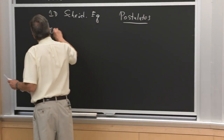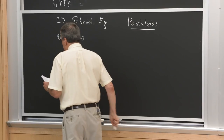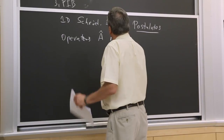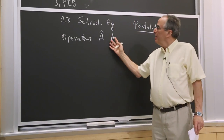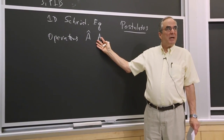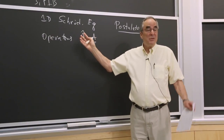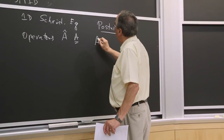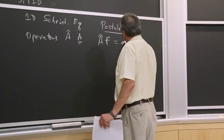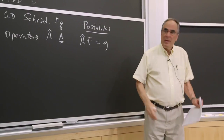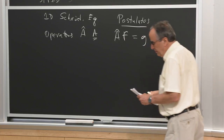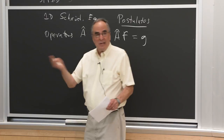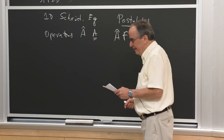We have operators in quantum mechanics, denoted either with a hat or as a boldface object. An operator operates on a function and gives a different function. It operates to the right. This operator has to be linear, meaning it satisfies: operator on (a·f + b·g) equals a·(operator on f) plus b·(operator on g).